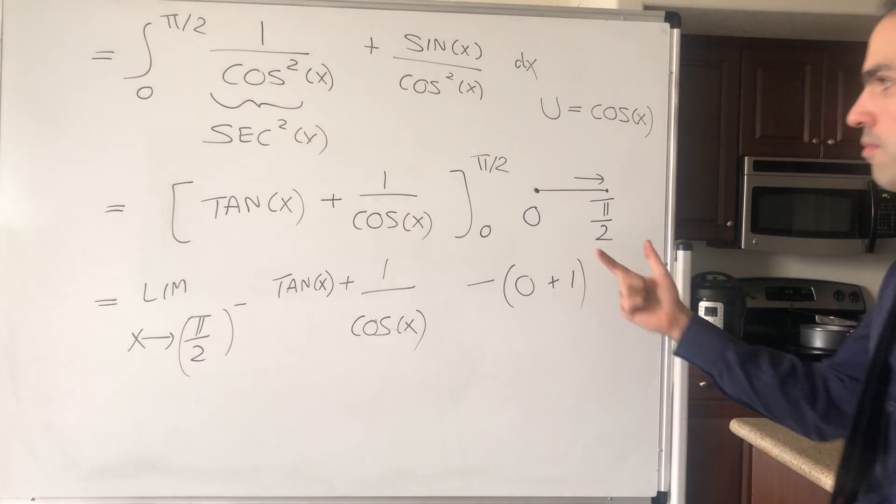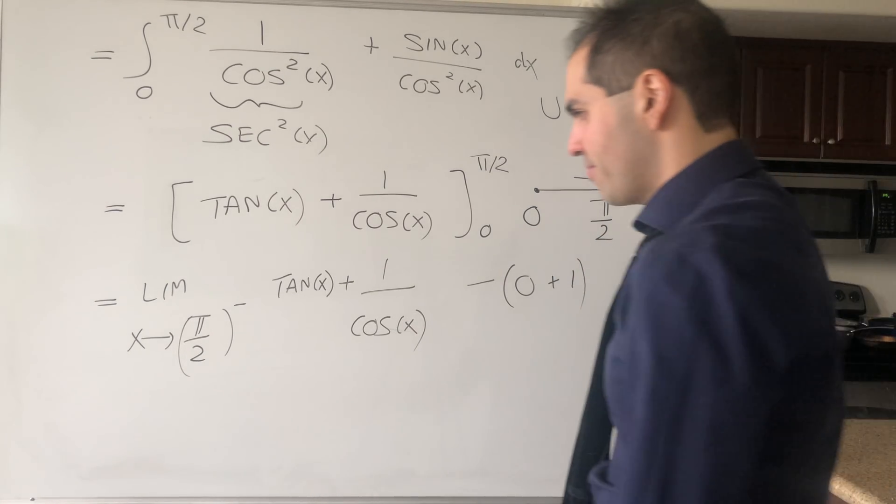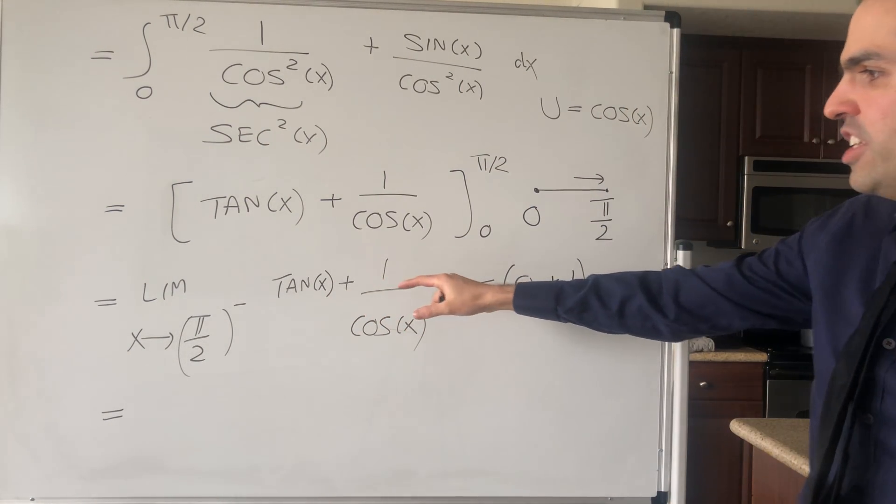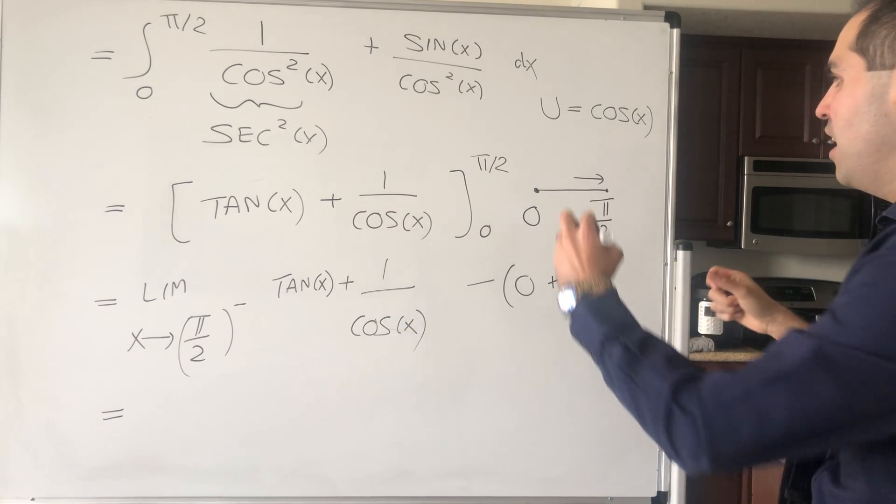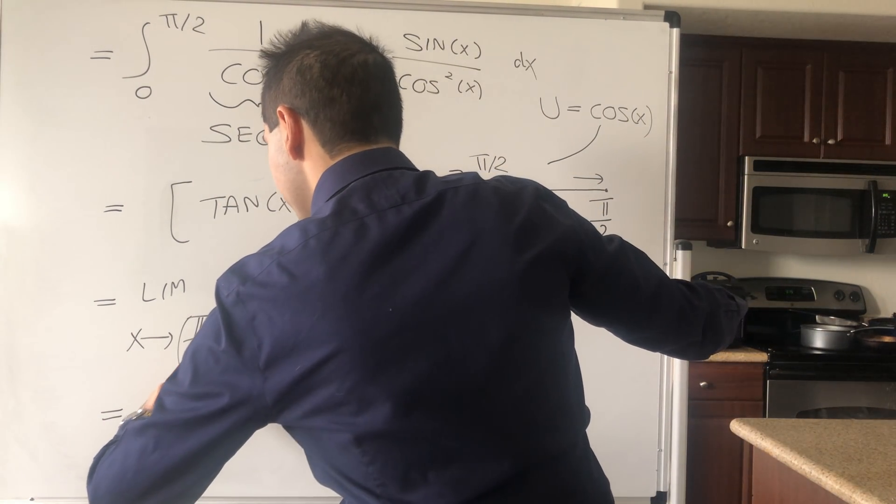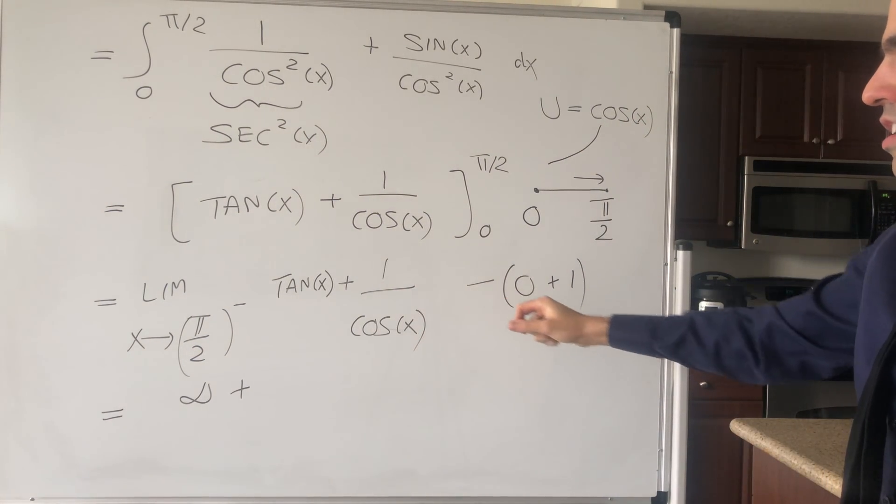What is tan(π/2) to the left? Remember tangent blows up to infinity. Then 1/cos(x)—cosine of x before π/2 kind of goes to 0⁺, so it's 1/0⁺.